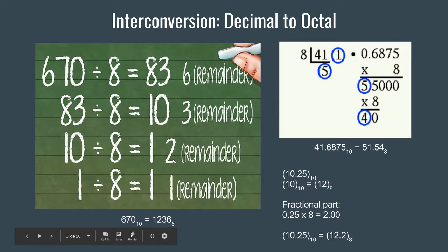Next is 2, so we place 2 adjacent to 1, then 3 and then 6. The octal equivalent of 670 decimal is 1236.